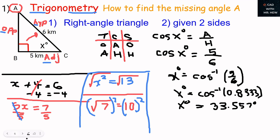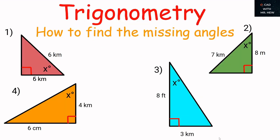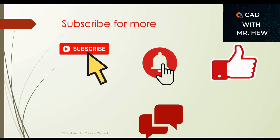This gives x = 33.56 degrees. We have come to the end of today's video. We used the principles of trigonometry to find the missing angle. In the next video, we'll be finding the other angle — we look forward to seeing you then. Please take care, bye! Don't forget to subscribe, hit the notification bell, like, comment, and share.